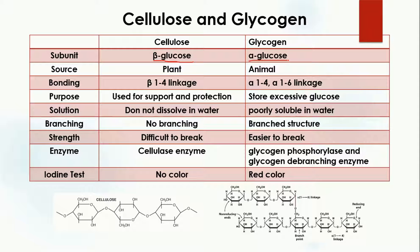I have already explained the difference between alpha and beta glucose many times, but just to remind you: in alpha glucose the OH group is present below the plane, while in beta glucose the OH group is present above the plane of carbon one. That is the difference between beta and alpha glucose.